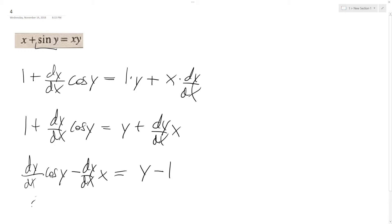So factor out the dy dx. We get cosine y minus x, because we factor out the dy dx, and we still have y minus 1. And then we divide through by cosine y minus x.